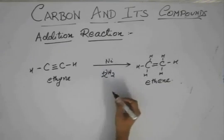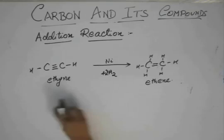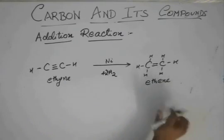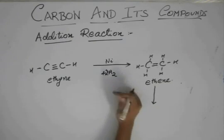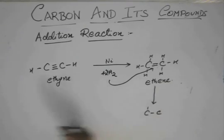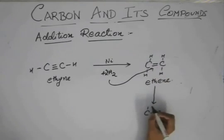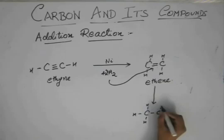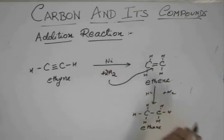Suppose we have two molecules of hydrogen. In this reaction, one molecule is consumed and one molecule still remains. So that remaining molecule can also add to this double bond, converting it to ethane. Nickel is already there and does not get consumed, so it can act as a catalyst for both reactions.